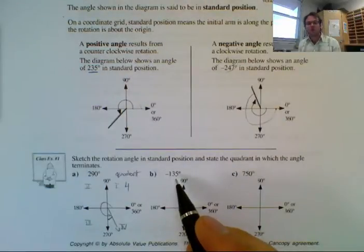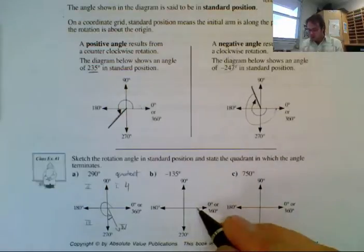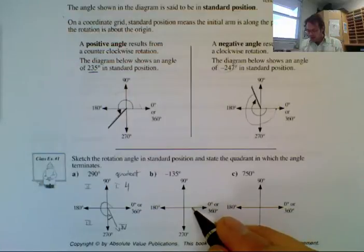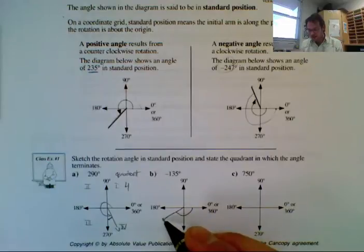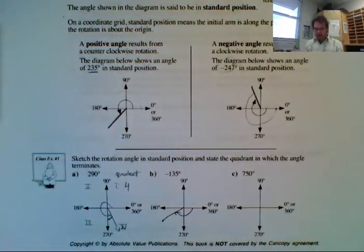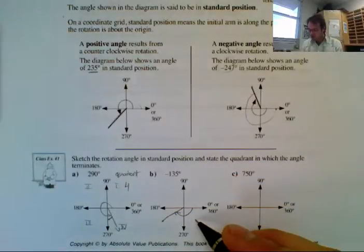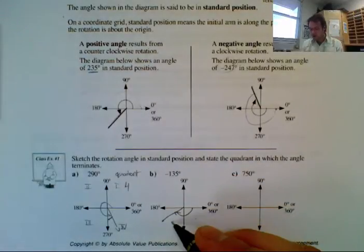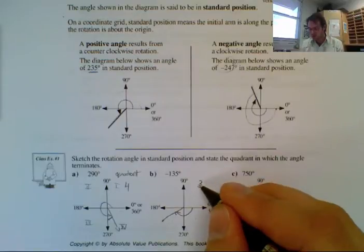Now I look at this one — we're going negative 135. So negative 135 is going this way; now we're going opposite. This is 90, and we're not quite 180, so negative 135 is going to be there, and we went from quadrant 4 to quadrant 3. So we finish in quadrant 3.